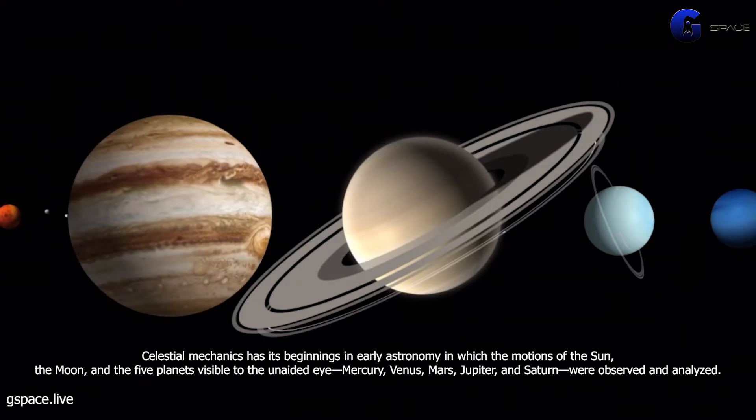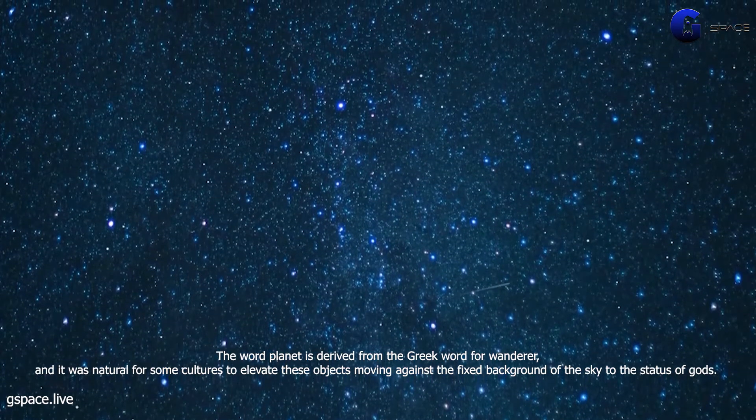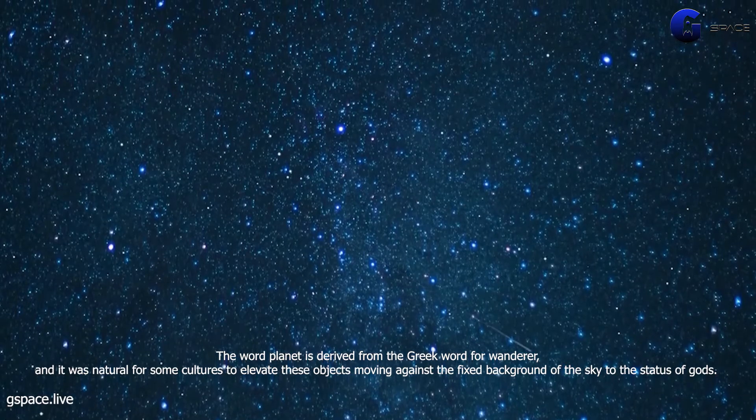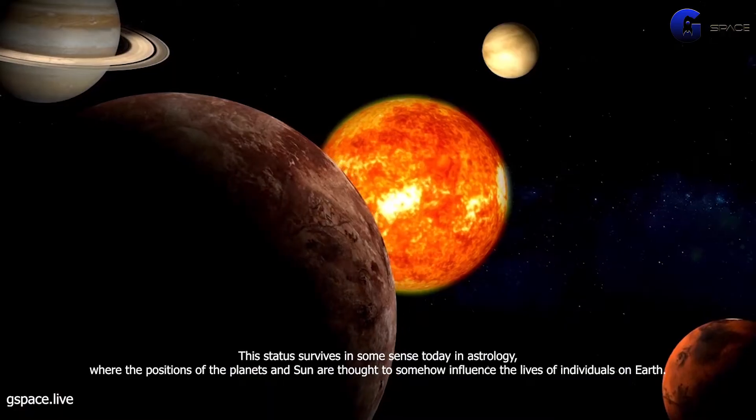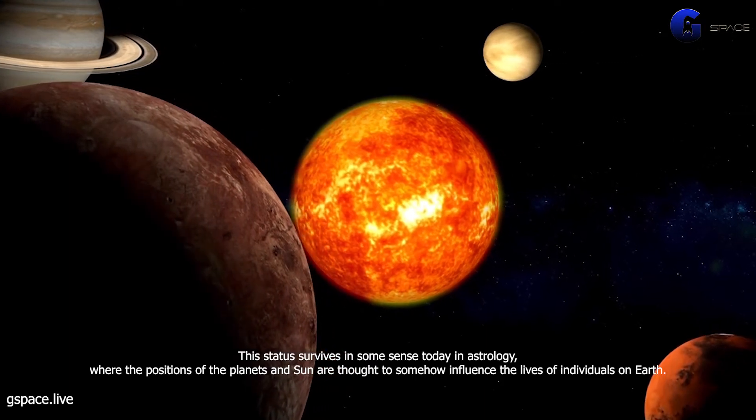The word planet is derived from the Greek word for wanderer, and it was natural for some cultures to elevate these objects moving against the fixed background of the sky to the status of gods. This status survives in some sense today in astrology, where the positions of the planets and sun are thought to somehow influence the lives of individuals on Earth.